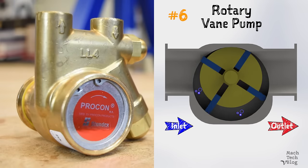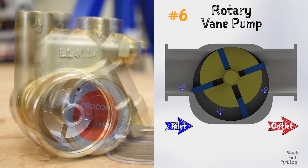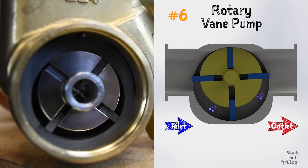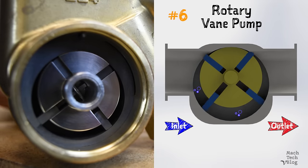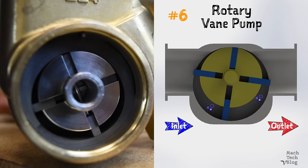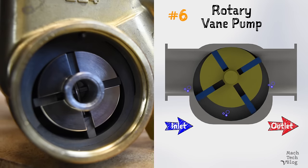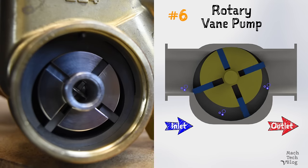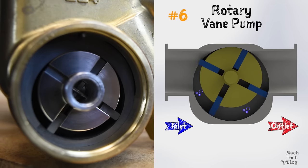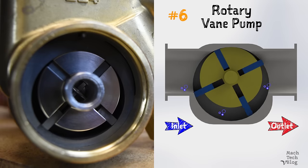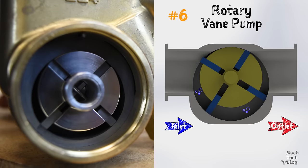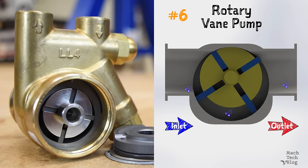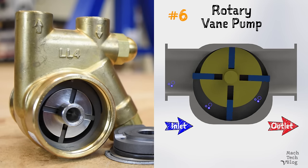Pump number six is the vane pump. A vane pump rotor has slots in it for sliding vanes. Centrifugal force flings the vanes out to contact the inside wall of the circular housing, forming a sealed chamber. Since the rotor is offset in the housing, the vanes extend and retract during rotation. The chamber increases in size at the suction inlet, drawing fluid in. At the discharge outlet, the chamber decreases in size, pushing fluid out. The nice thing about vane pumps is that they automatically compensate for wear, because the vanes are constantly forced against the wall of the housing.